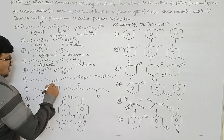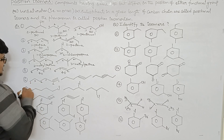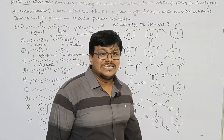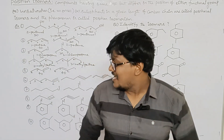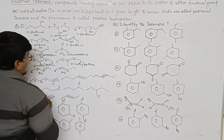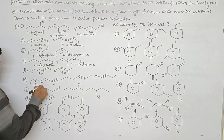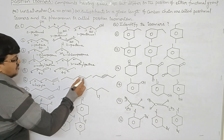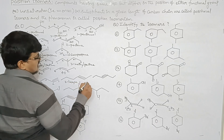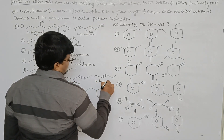The sixth example has 6 carbons — hexyne. The first compound is named 1-hexyne, the second compound is 2-hexyne, and the third compound is named 3-hexyne.